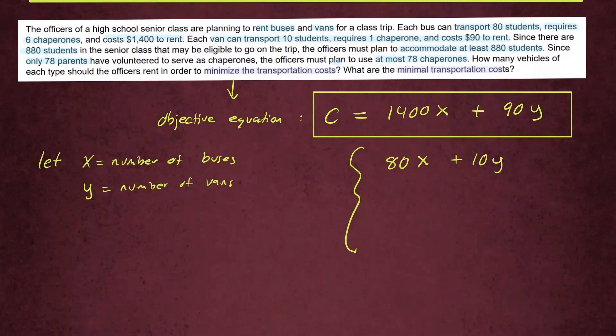And since there are 880 students, and it must accommodate at least 880 students, so the sum of these has to be at least, so greater than or equal to 880 students. So this is the inequality for the number of students you can accommodate either using van or buses. And then the second part of it, we're going to work with the chaperones for buses and vans.